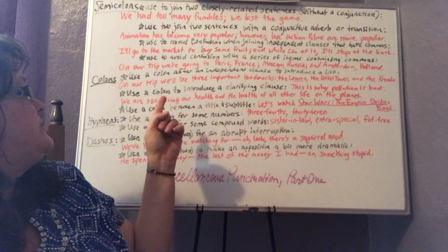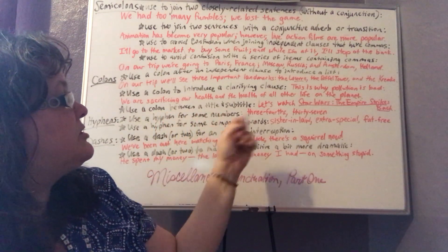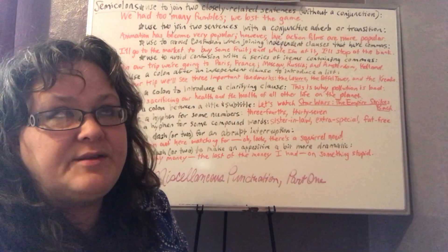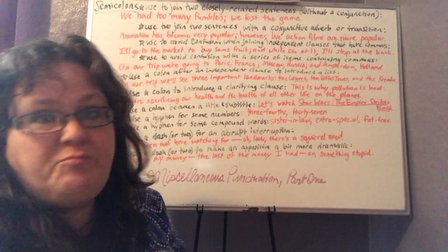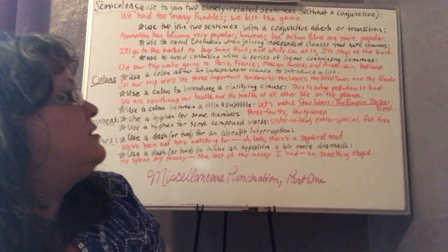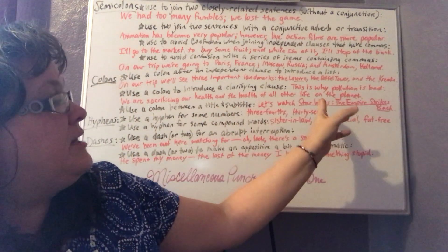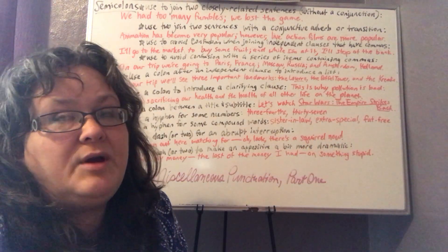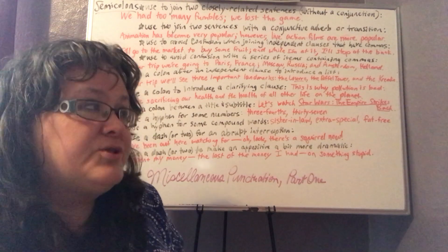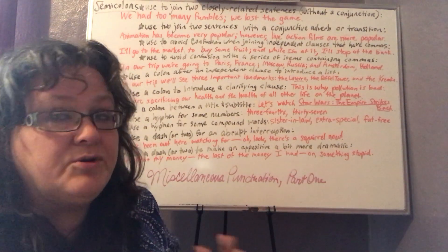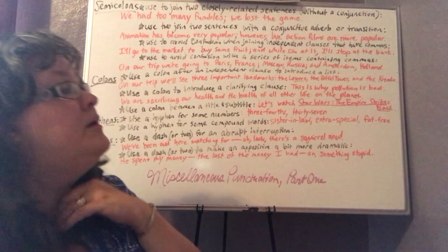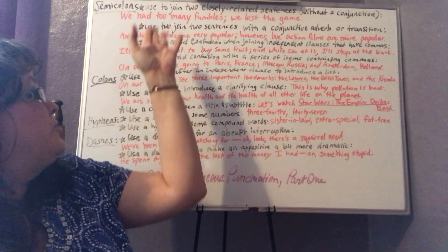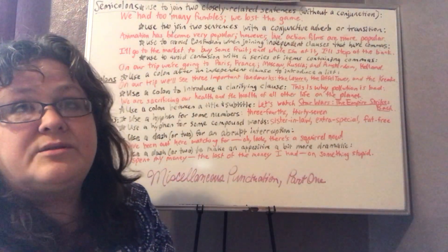The next rule says: use a colon between a title and subtitle. For example: 'Let's watch Star Wars: The Empire Strikes Back.' A lot of people say that's the best movie in the Star Wars pantheon. It has a title — Star Wars — and a subtitle — The Empire Strikes Back. There are many other Star Wars films with the same colon structure, like Star Wars: Revenge of the Jedi. That's title-subtitle. That's it for colons and semicolons.